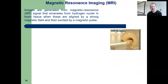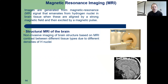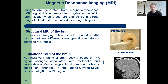Looking at MRI, magnetic resonance imaging: images are generated from the MR signal that emanates from hydrogen nuclei in brain tissue, when these are aligned by a strong magnetic field and then excited by a magnetic pulse. There are different types of MRI. Structural MRI is non-invasive imaging of brain structures based on MRI contrast between different tissue types due to different densities of hydrogen nuclei. Functional MRI (fMRI) is non-invasive imaging of brain activity based on MR signal changes associated with metabolic and cerebral blood flow changes. The most common method is based on changes in the blood oxygen level-dependent MR signal, known as the BOLD signal.